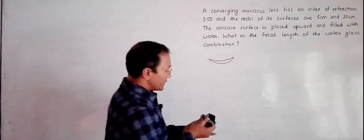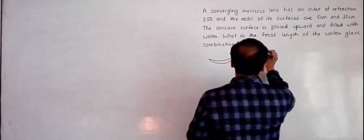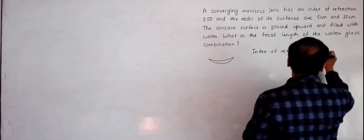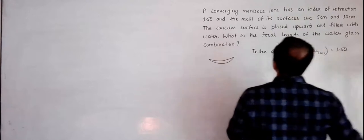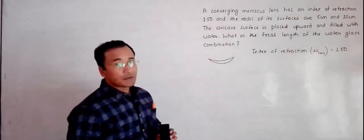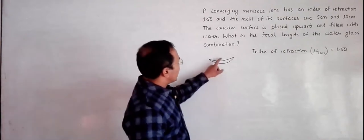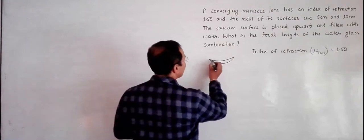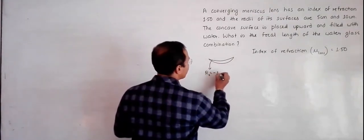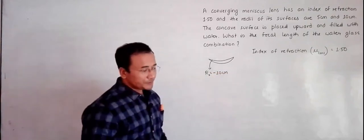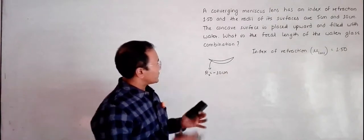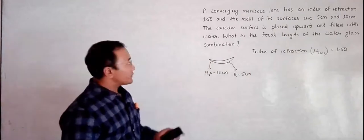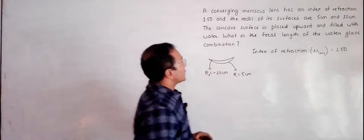So we have this type of lens whose index of refraction, written as mu, is equal to 1.50. Its surfaces have radii of curvature of 5 cm and 10 cm. Among these two surfaces, the surface with the larger radius of curvature should be: R2 equals minus 10 cm, because it is concave and slightly going inward. And R1 equals 5 cm, since it is convex, so it is positive.